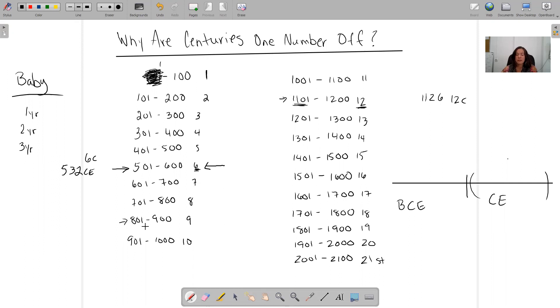The year 872 is the ninth century. There you go. That's why.